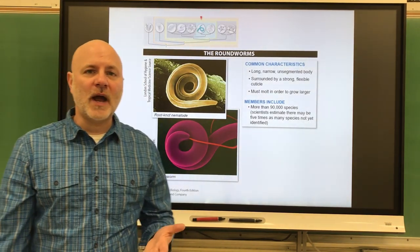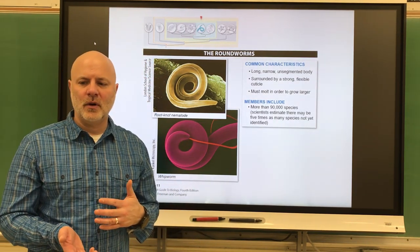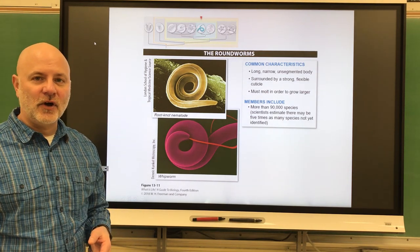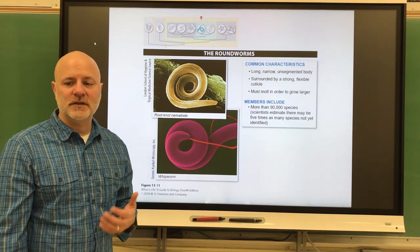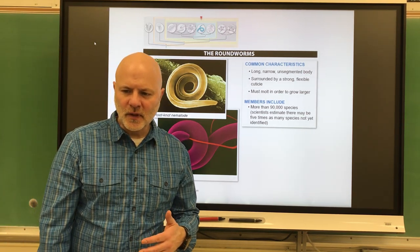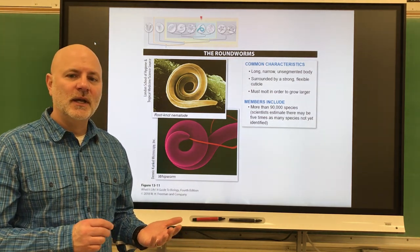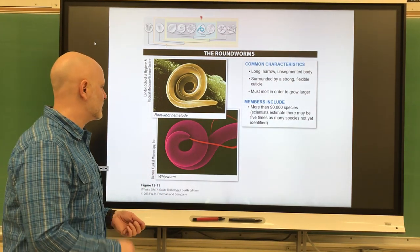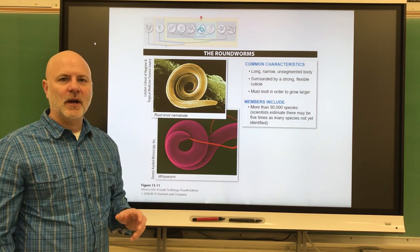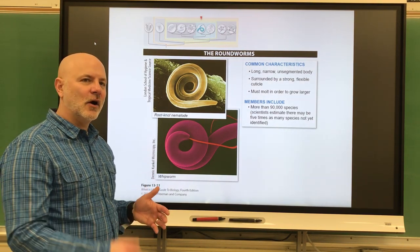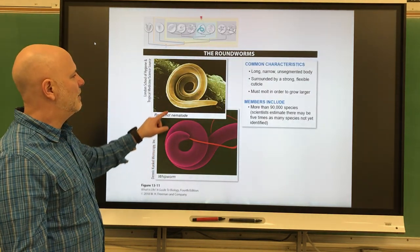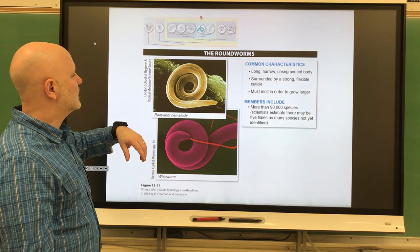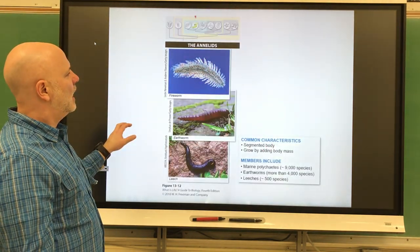Next are the roundworms, which include ascaris, heartworm, pinworms, hookworms, and filaria. These are pseudocoelomates with a false body cavity. They are unsegmented and bilaterally symmetrical worms, and they are also protostomes. They are surrounded by a strong, flexible cuticle and molt in order to grow larger. These guys are found in soil and aquatic sediments, and they're also parasitic — things like whipworms, pinworms, hookworms, and heartworms. Most of them live in soil and aquatic sediments, and there are lots and lots of them.